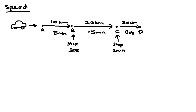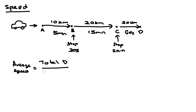Let's look at this example where a car travels from point A to point D following a path. For the first part, he drove 10 kilometers within 5 minutes. He stopped for 30 seconds. Then he drove another 20 kilometers in 15 minutes. Then he stopped for 2 minutes. Then he drove another 200 meters within 60 seconds. What is the average speed of his entire journey? Notice there are different units — both meters and kilometers for distance, and both seconds and minutes for time. We are going to find the average speed in SI units.